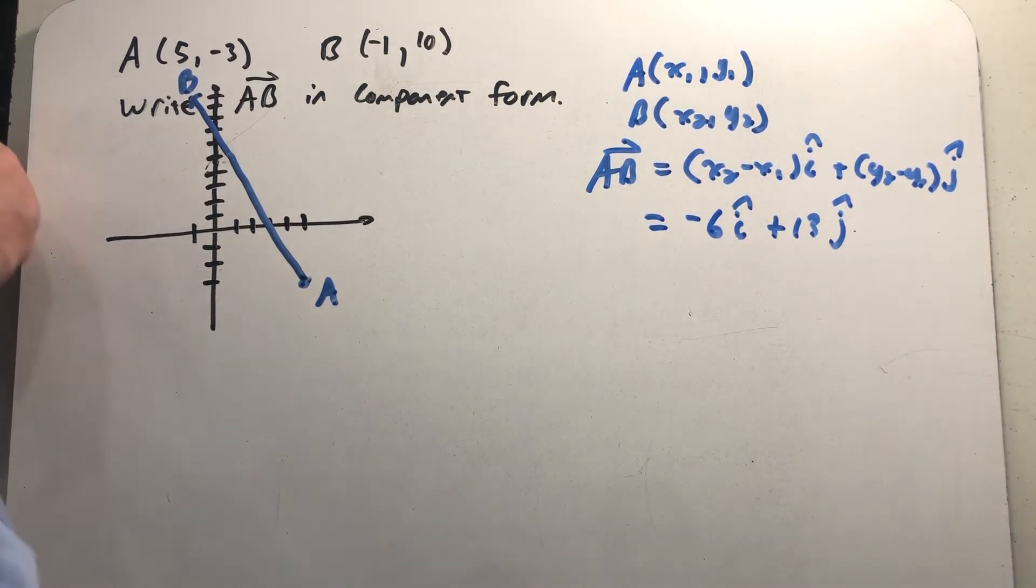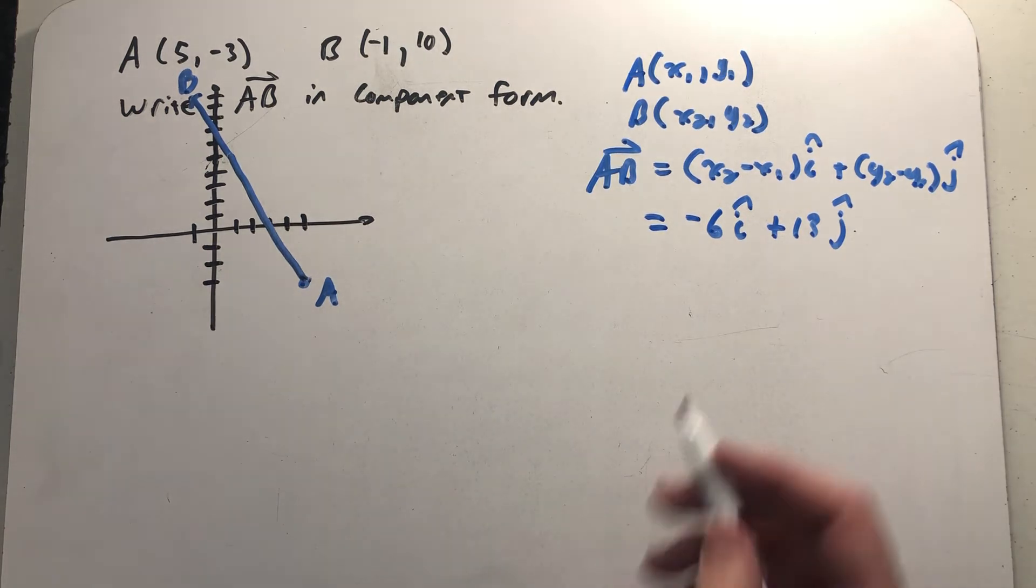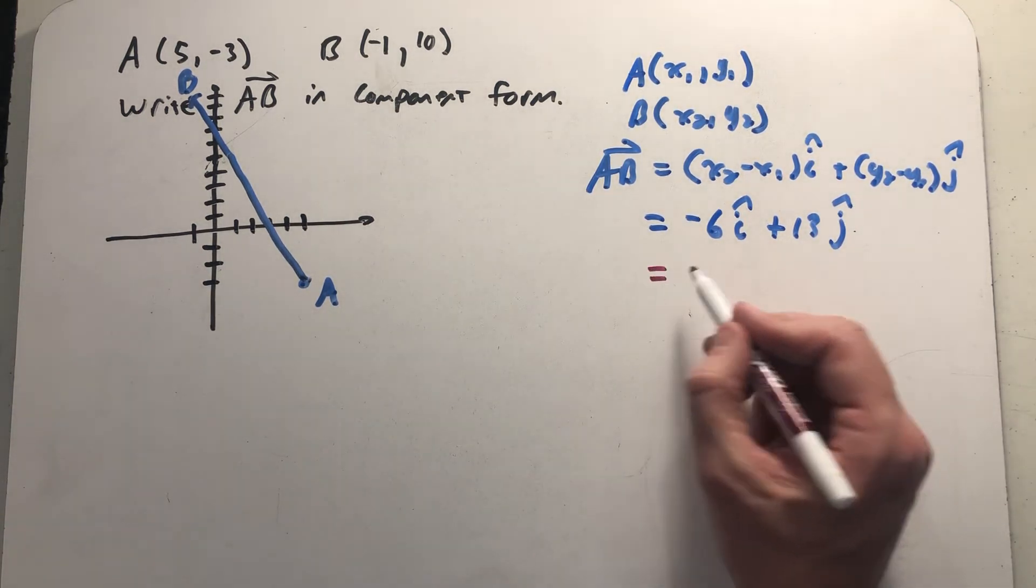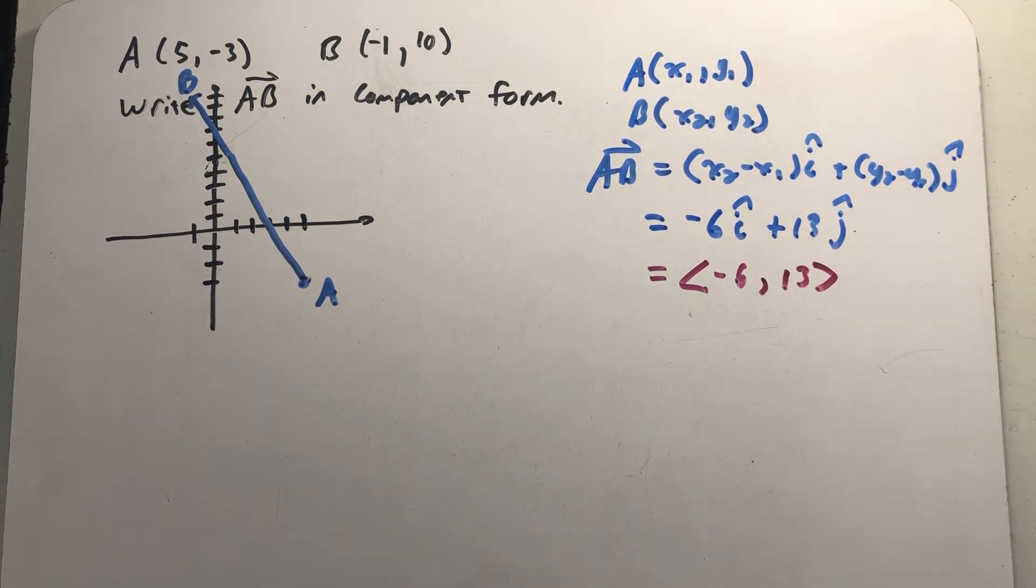All right, well when I see this vector written like this, I'm thinking about it as a vector that starts at the origin and then points to that point, minus 6 comma 13. I could also think about it in a component form written down like this with the vector braces.